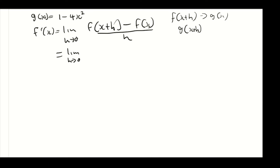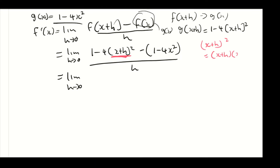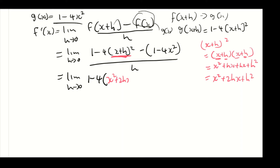Let's expand (x+h) squared. So (x+h) squared equals (x+h)(x+h). Multiplying through using the FOIL method: x squared, plus hx, plus hx, plus h squared — giving us x squared plus 2hx plus h squared. We substitute that back in: 1 minus 4 times (x squared + 2hx + h squared), minus (1 minus 4x squared), divided by h.